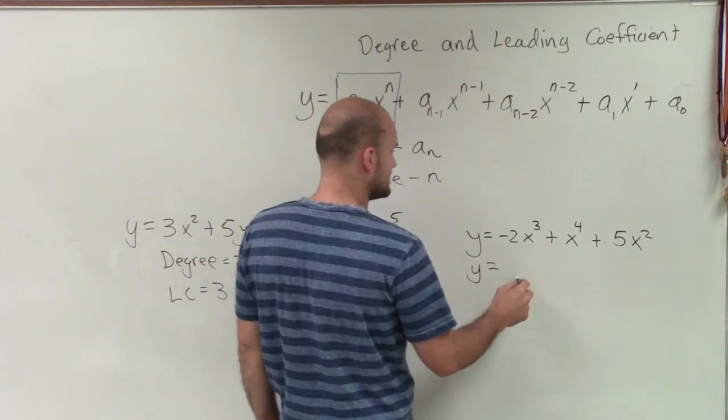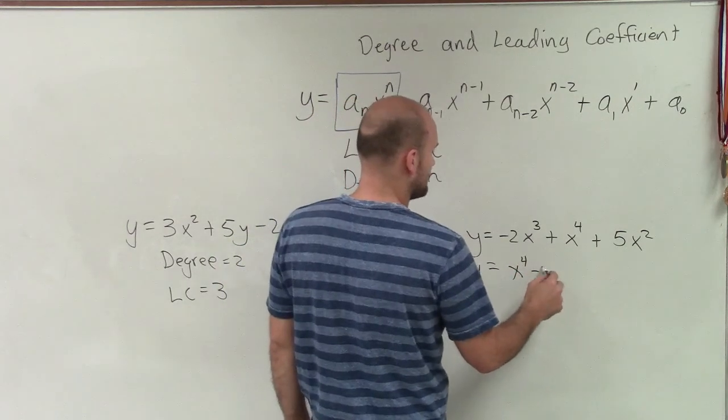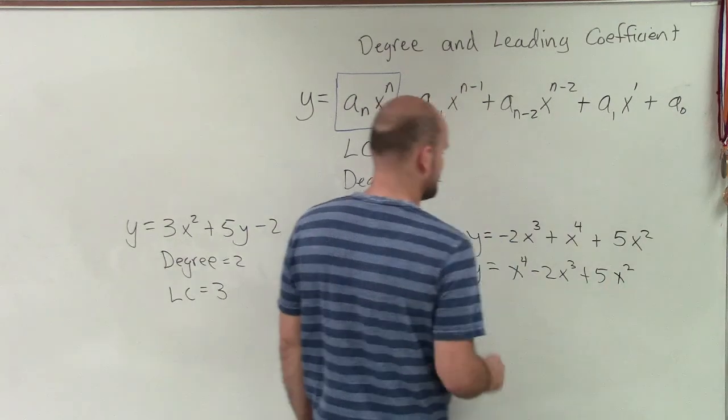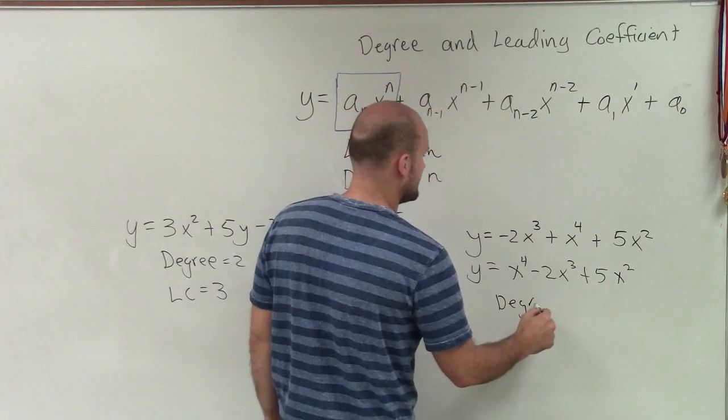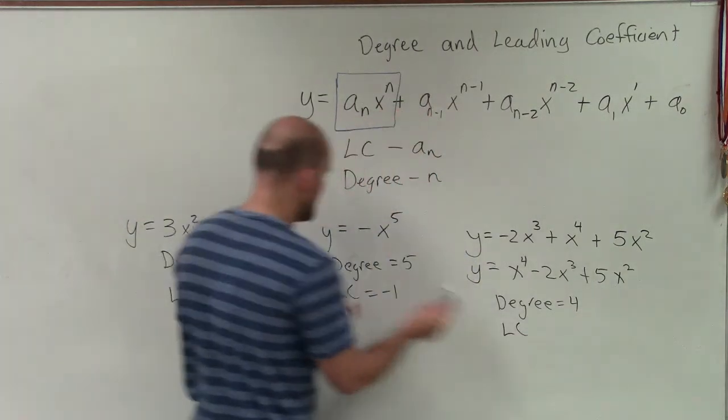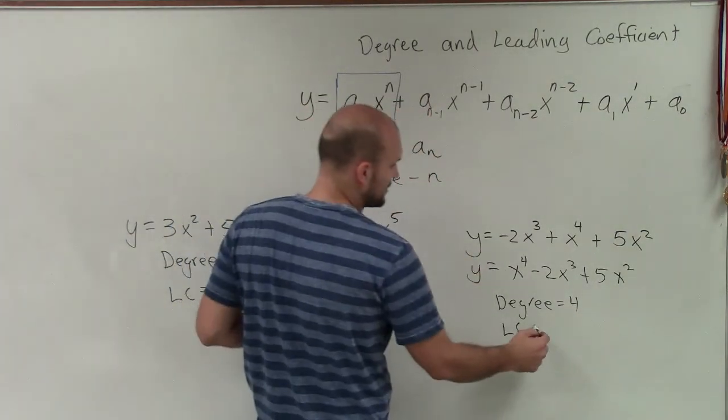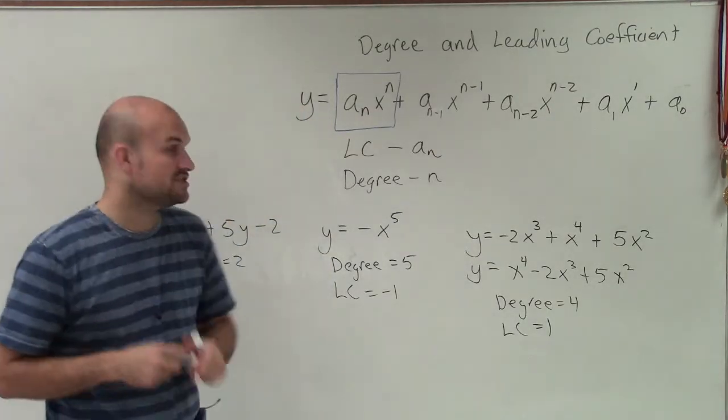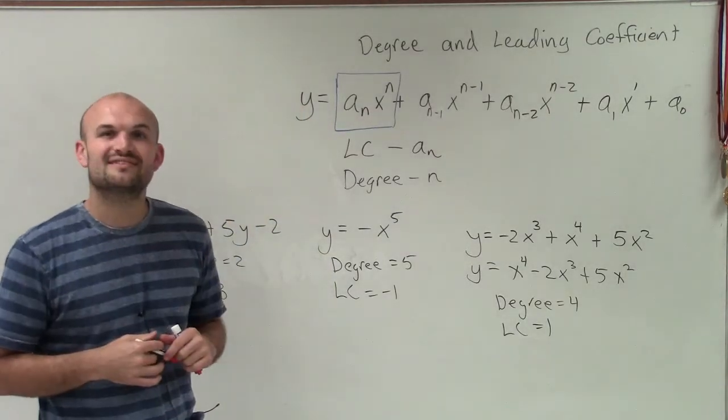So I'm going to have to rewrite this as x to the fourth minus 2x cubed plus 5x squared. And here we can see that the degree is the largest exponent, which is equal to 4. And the leading coefficient is a value of 1. So there you go, ladies and gentlemen. That's how you determine the leading coefficient and a degree given a polynomial. Thanks.